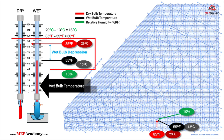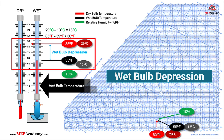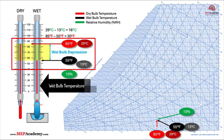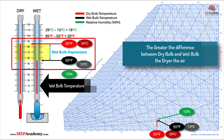Wet bulb depression is an indicator of how much the air can cool down through the process of evaporation. The larger the temperature depression, the drier the air, which means it has more capacity to absorb moisture.